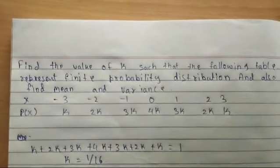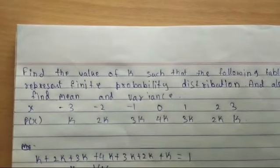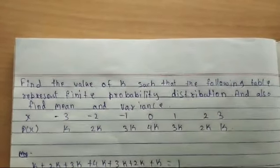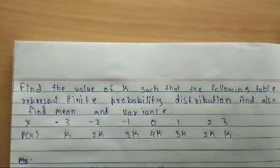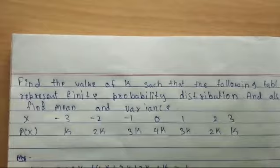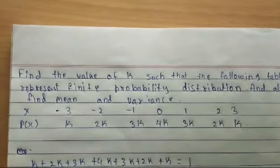Good morning everyone, I am Vishwa Sethalmani, second year CS department. So now we are going to solve our finite probability distribution and we should find the value of k. For that, x value and p of x value is already given. P of x is given in terms of k, so sum of all k values will be one.